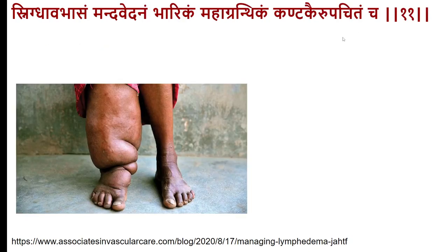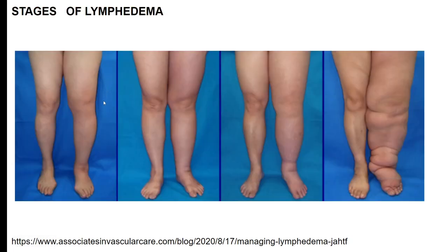The Kaphaja Shlipada variety has shrinthava vasam (soft/fatty appearance), manda vedanam (mild pain), bharikam (heaviness), and kantakerupa (thorn-like surface). This represents the long stage of lymphedema where skin changes have not yet fully occurred, but dilated lymphatic vessels produce areas of varying consistency. When the skin becomes involved and thicker, that is the bharikam variety. I would consider the progression as: initial — Pittaja, then Kaphaja, then Vataja (the most chronic stage).